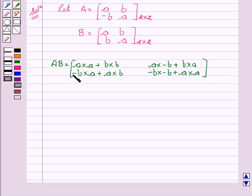This is equal to A square plus B square minus AB plus AB minus BA plus AB minus B square plus B square plus A square.